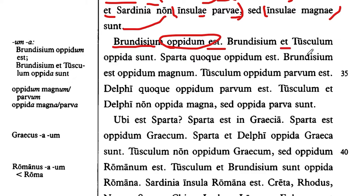Brundisium and Tusculum are cities. This is our first introduction to a neuter noun, and we see that the plural of the neuter noun is exactly like the feminine singular. We have oppidum in the singular, and whenever we have more than one oppidum, more than one town, it's oppida. Just because you see an A at the end of a word doesn't necessarily make it feminine — it might be neuter and plural. So you need to look at the verb, see if you're talking about a singular or plural thing, and also bear in mind your cases and how they're functioning.